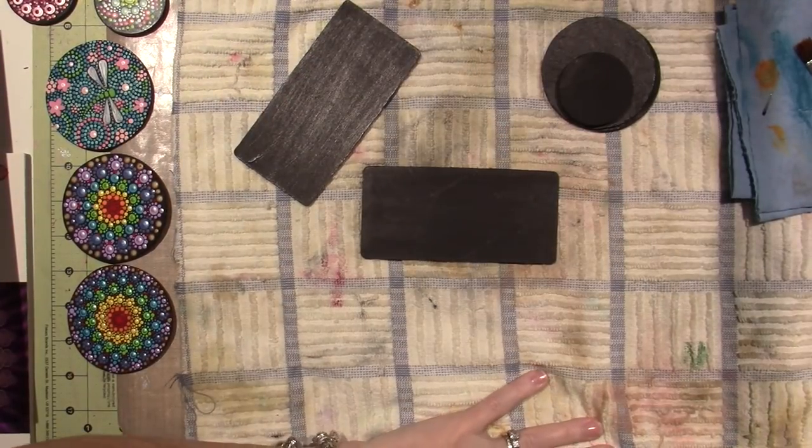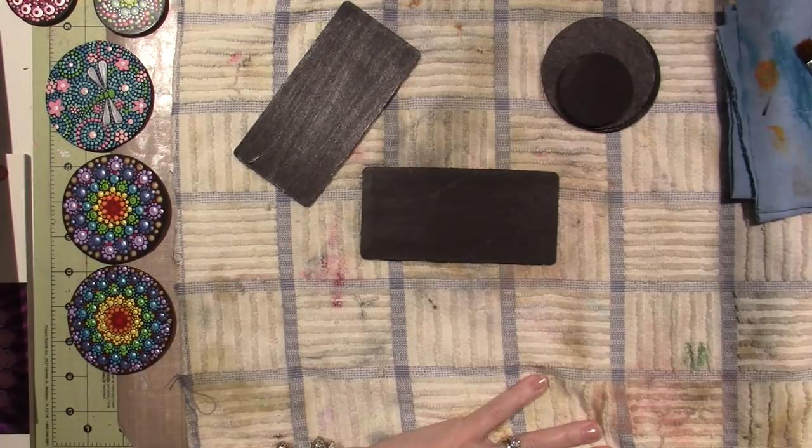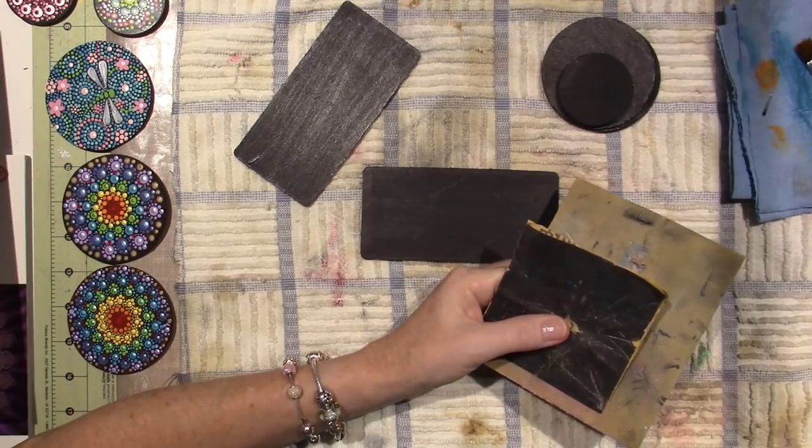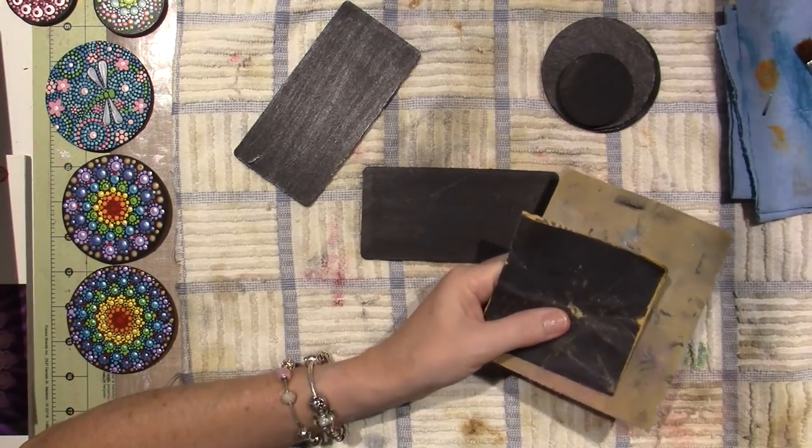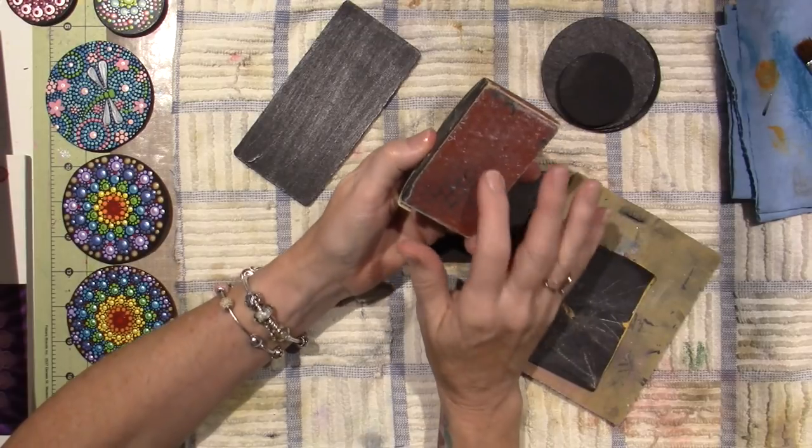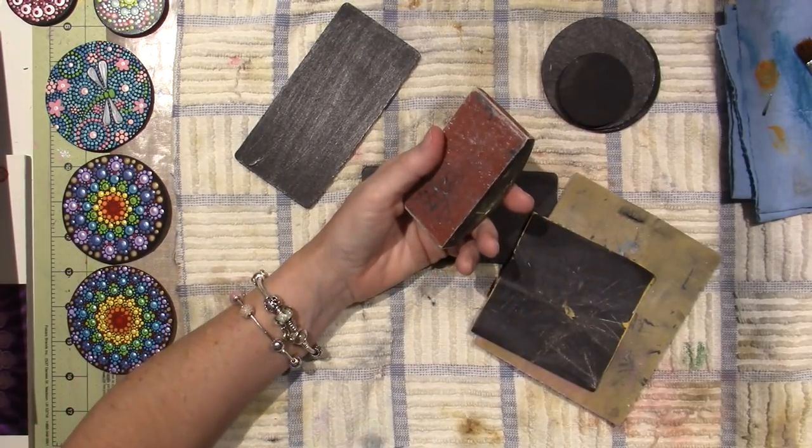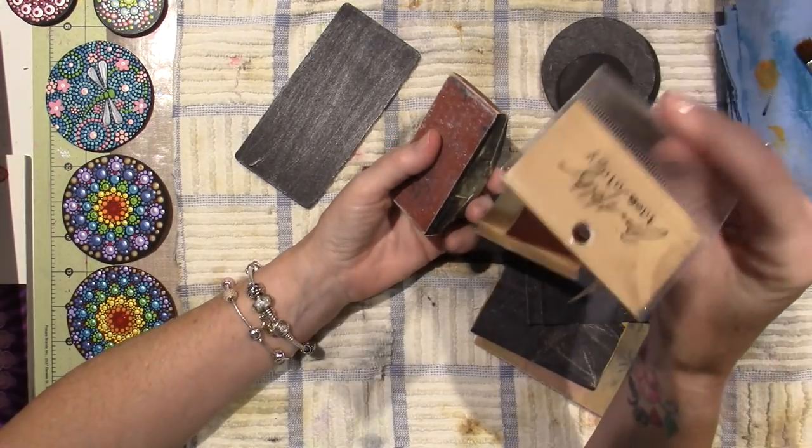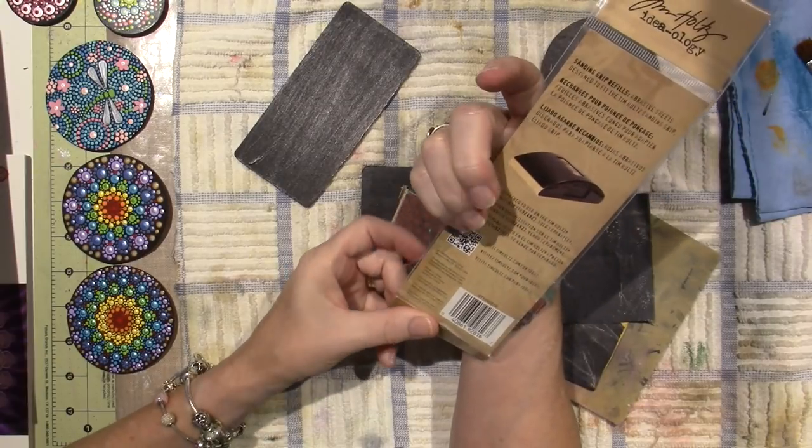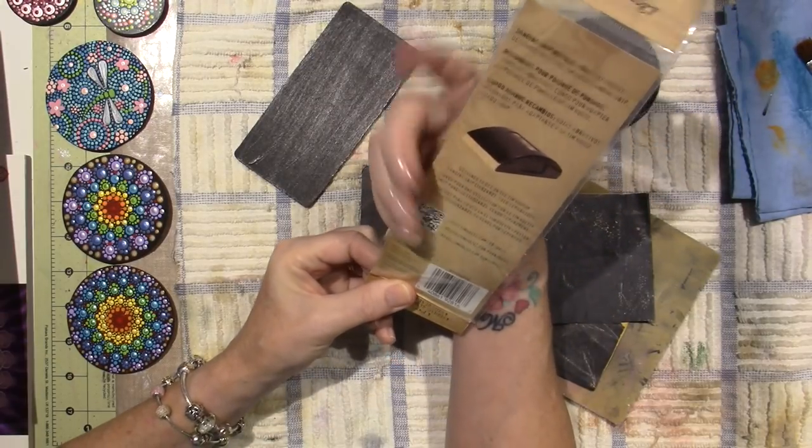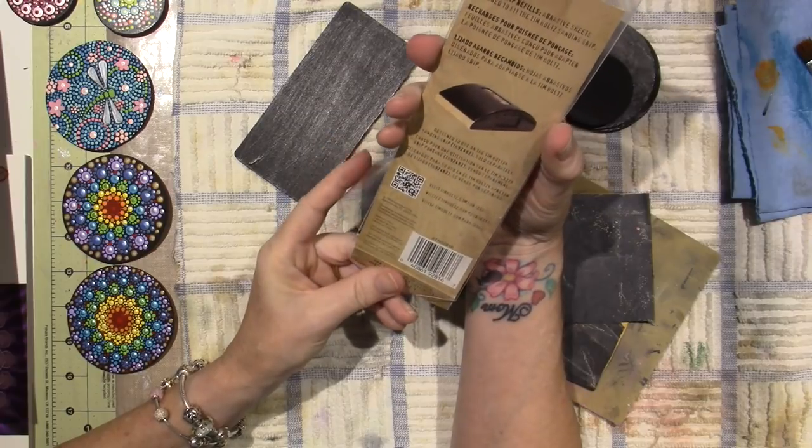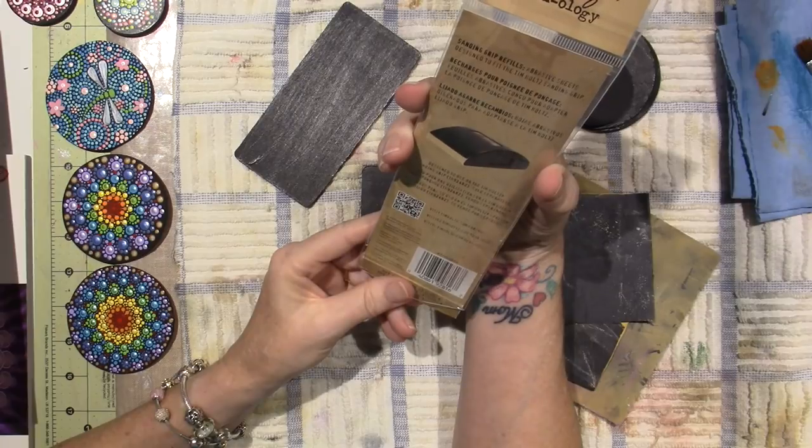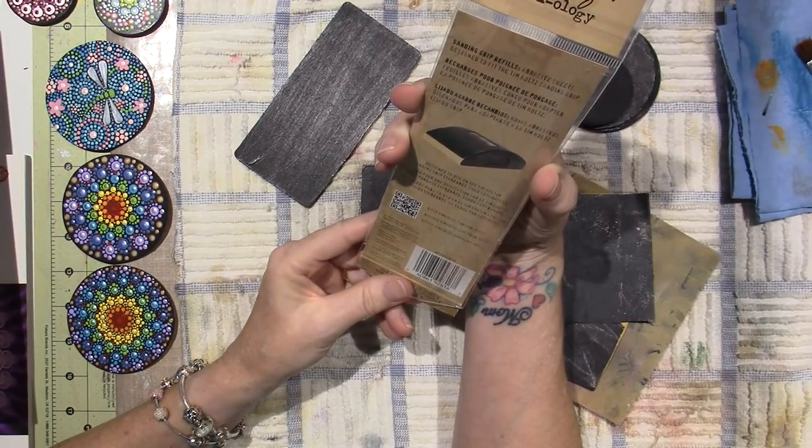I use, I have all different kinds of sandpaper. Like, guys, I am not that specific, but you need to get some finer sandpaper for fine work. Like, this is the Tim Holtz sanding block, and it came with, here, I have it right here. Yay, Sarah, for having something. Okay, this is, let's see if it has the grit of the sandpaper on it. Designed to use on the sanding grip. Let's see if it has, it says abrasive sheets designed to fit the Tim Holtz sanding. You know why? I think it's for distressing.